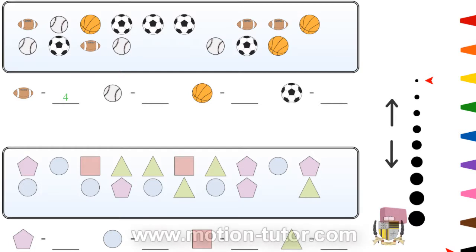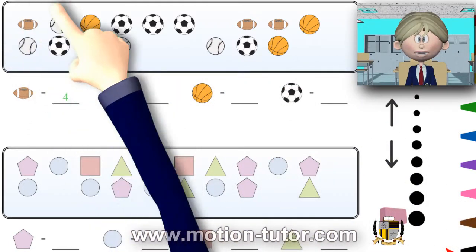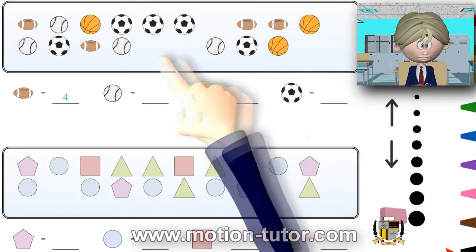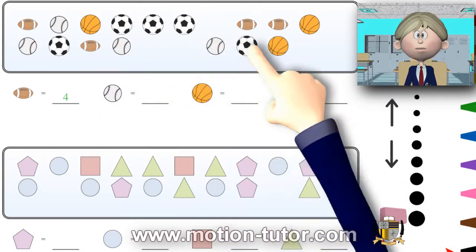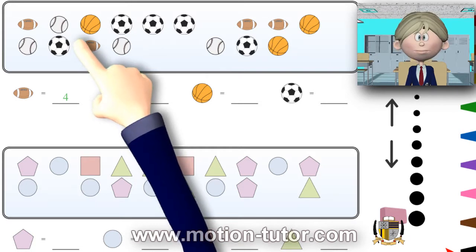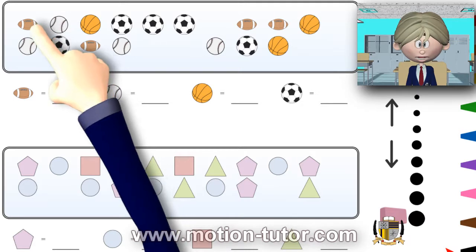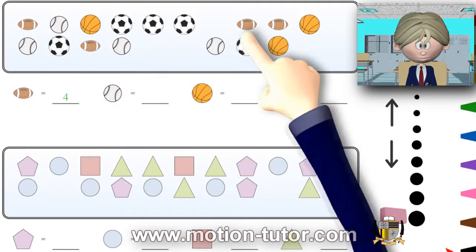Hey everyone, for this worksheet we'll be looking in this big box over here and counting the different types of objects. What I mean is we're going to count the number of individual different objects in here.